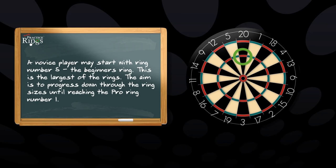A novice player may start with ring number 5, the beginner's ring. This is the largest of the rings. The aim is to progress down through the ring sizes until reaching the pro ring number 1.